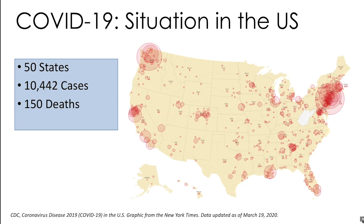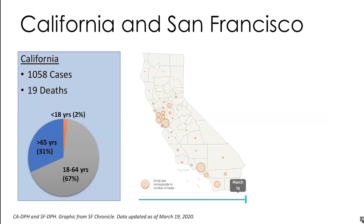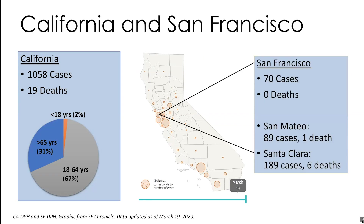In California, as of March 19th, there have been over 1,000 cases and 19 deaths. About a third of cases are in those over 65 and two-thirds in those under 65, but only 2% of cases are in those under 18. Cases in California have been mostly in the Bay Area. In San Francisco, there have been 70 cases and zero deaths. In San Mateo, 89 cases and one death. And Santa Clara, which has had the most cases to date, has had 189 cases and six deaths.